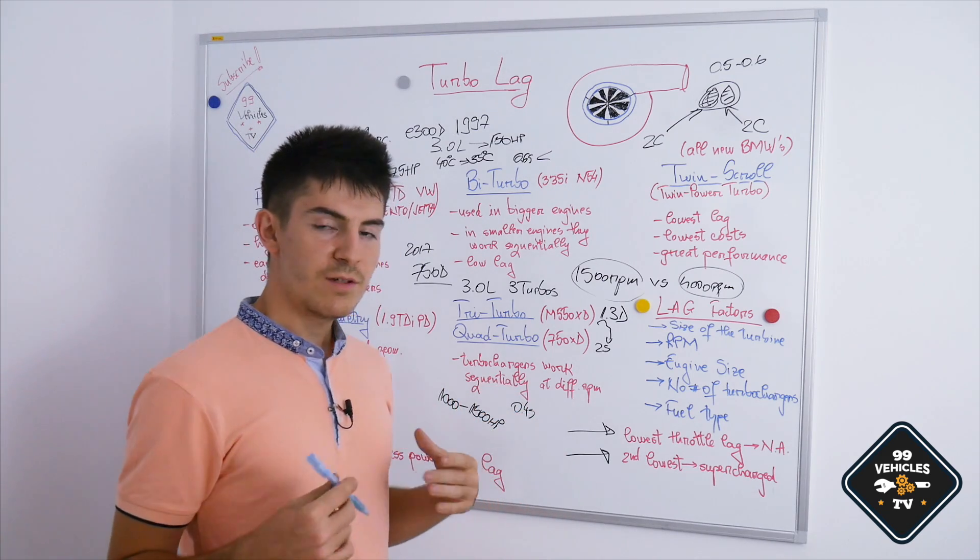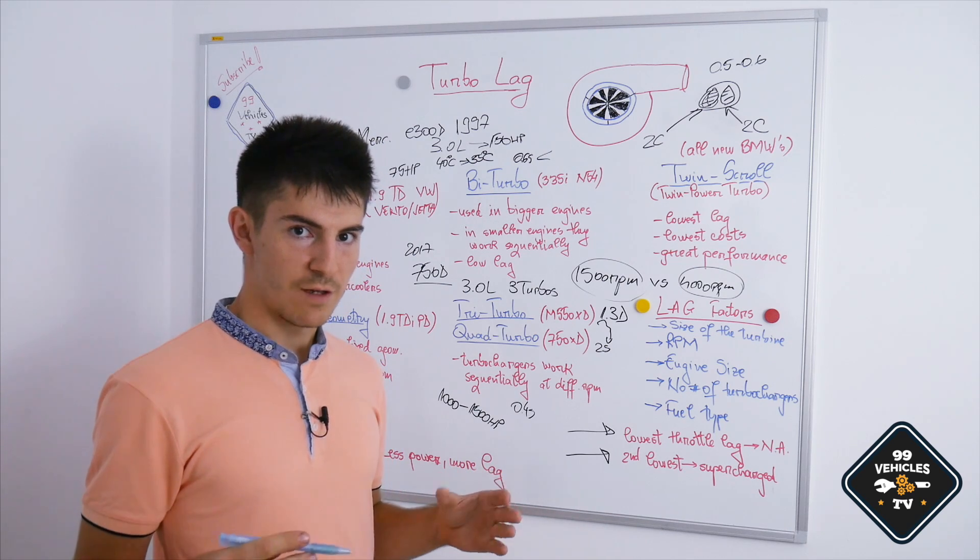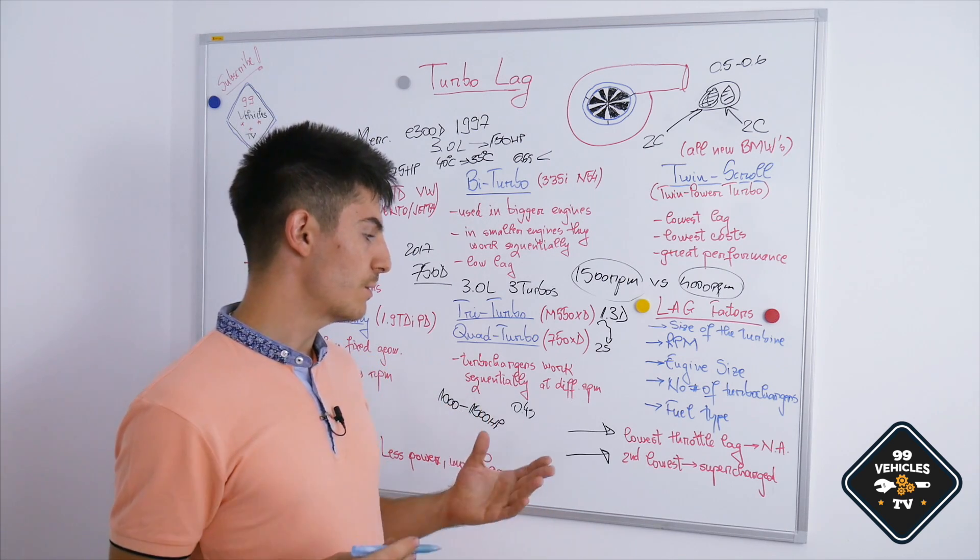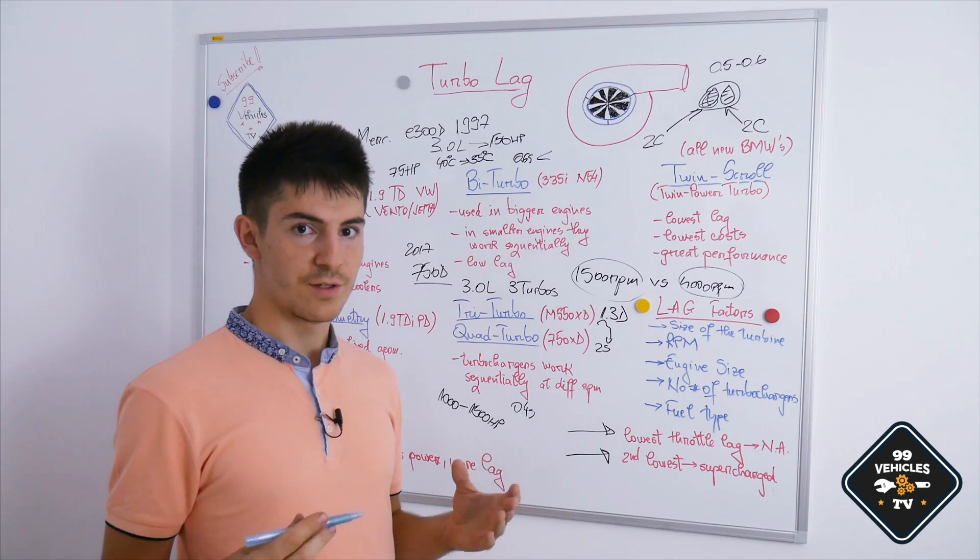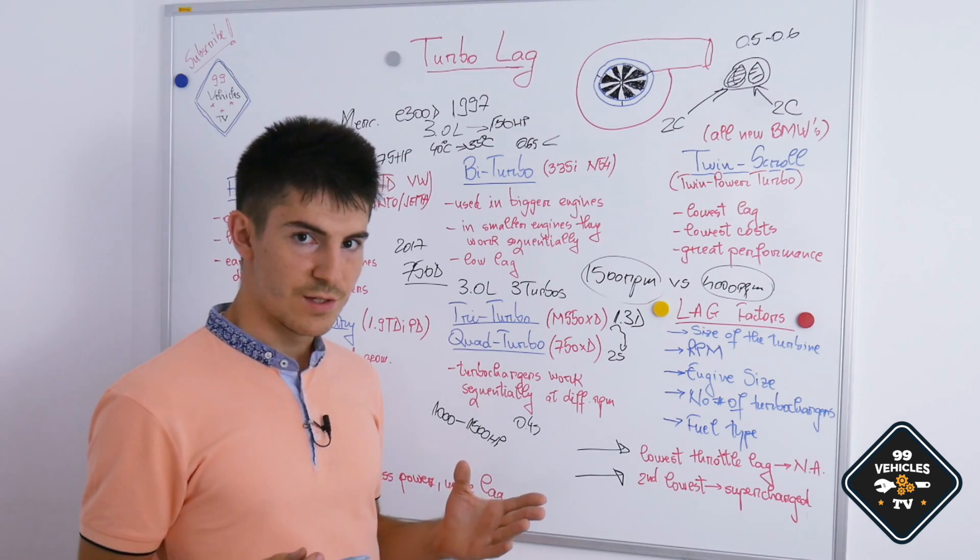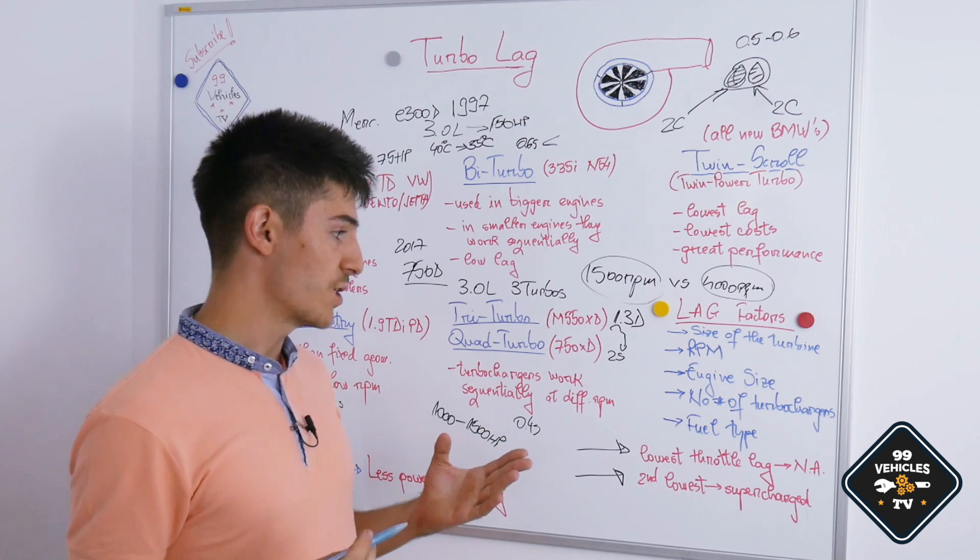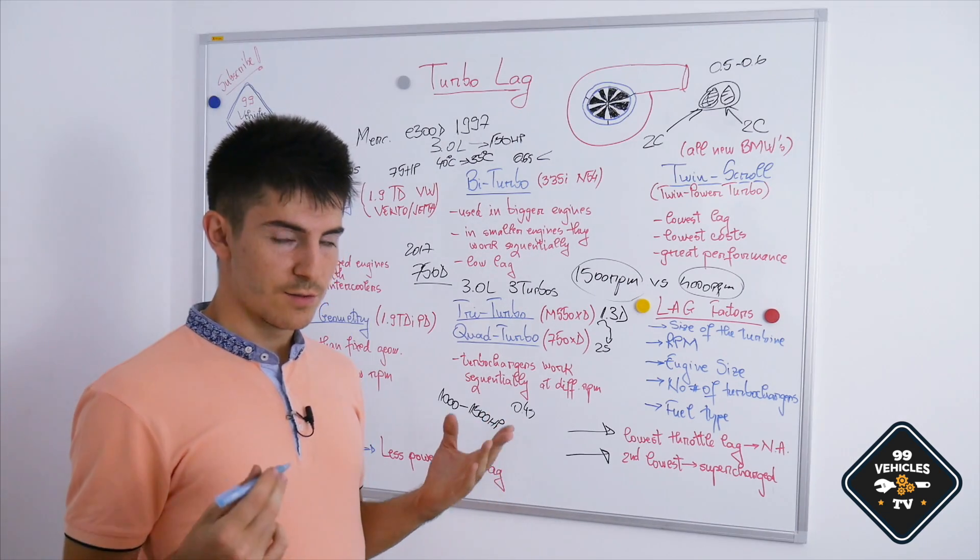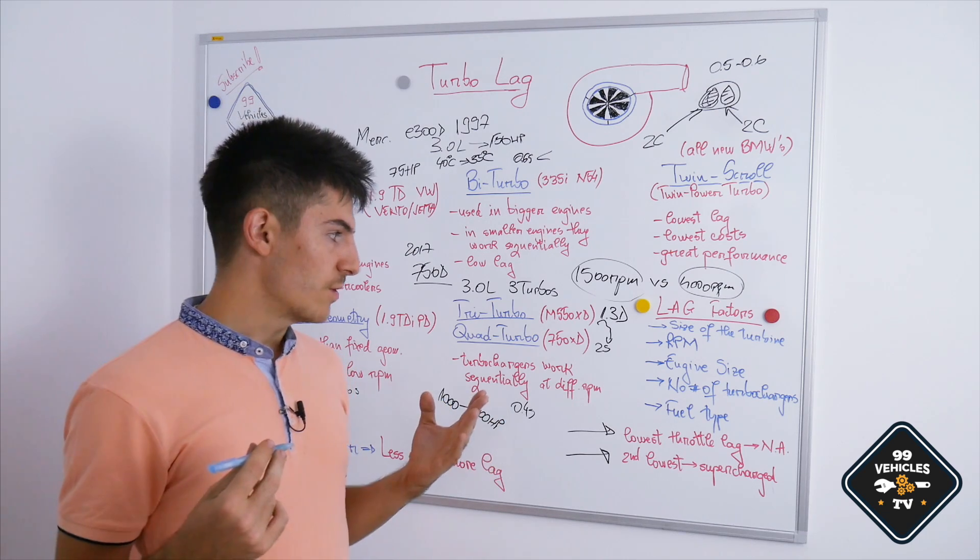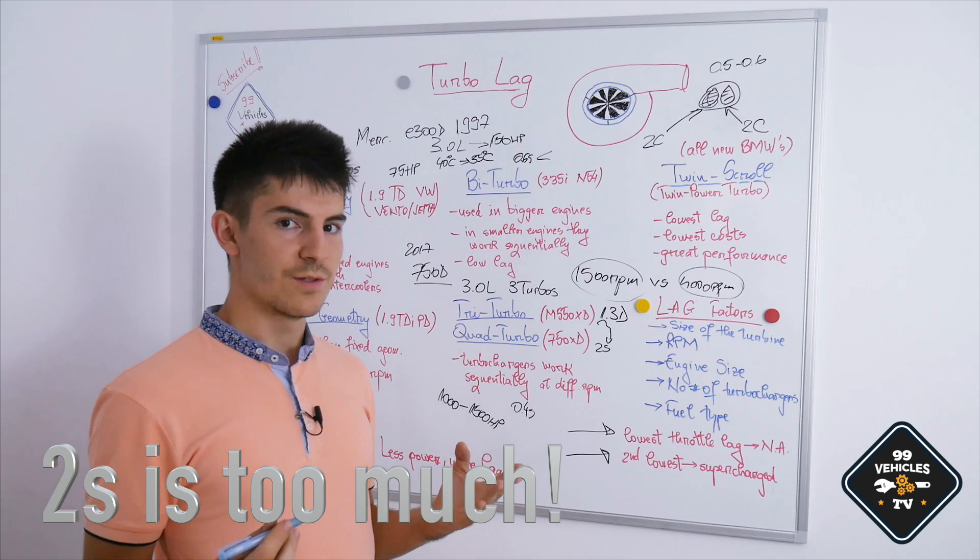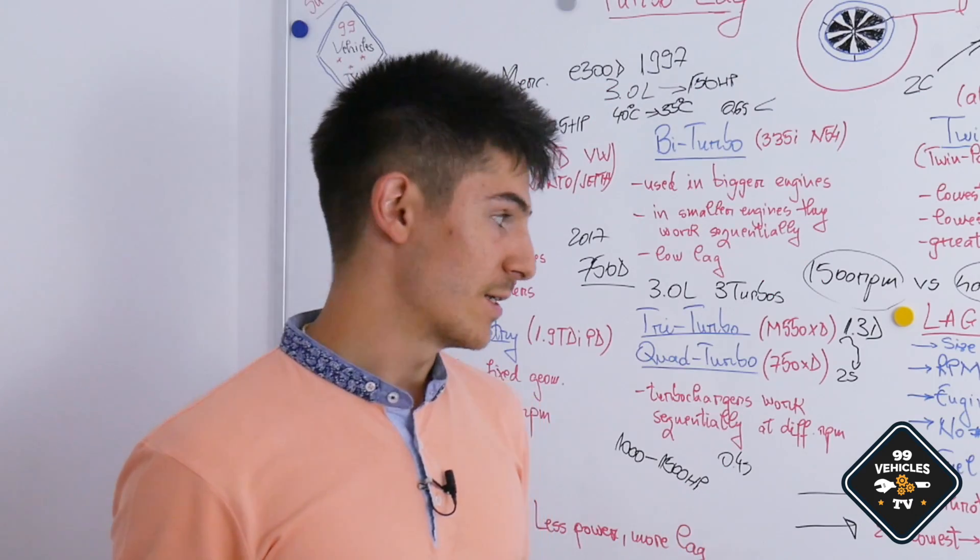Also, the engine size. Having a bigger engine will result in having more exhaust gases. So if we have more exhaust, we could build pressure within the turbine much faster. I actually experienced this in a 1.3 diesel engine with an inline-four configuration. It was so small and the turbine was also small. If I floor the acceleration, I experienced around 2 seconds of lag, which is a lot in my opinion.